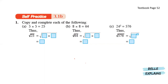Copy and complete each of the following. So here we have 5 times 5 equals 25. So that means that the square root of 25 equals the square root of 5 times 5, which means that the square root of 25 equals 5. Next, 8 times 8 equals 64, so the square root of 64 equals the square root of 8 times 8, which means the square root of 64 equals 8.